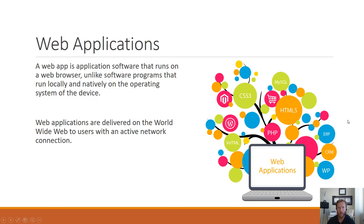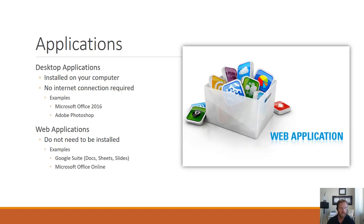When we're talking about web apps, we can differentiate them from desktop applications. Desktop applications are installed on your computer and they don't require any internet connection to use. Some examples of this would be Microsoft Office 2016. A web application, on the other hand, doesn't need to be installed on your computer and is used through a web browser — like Microsoft Office Online.